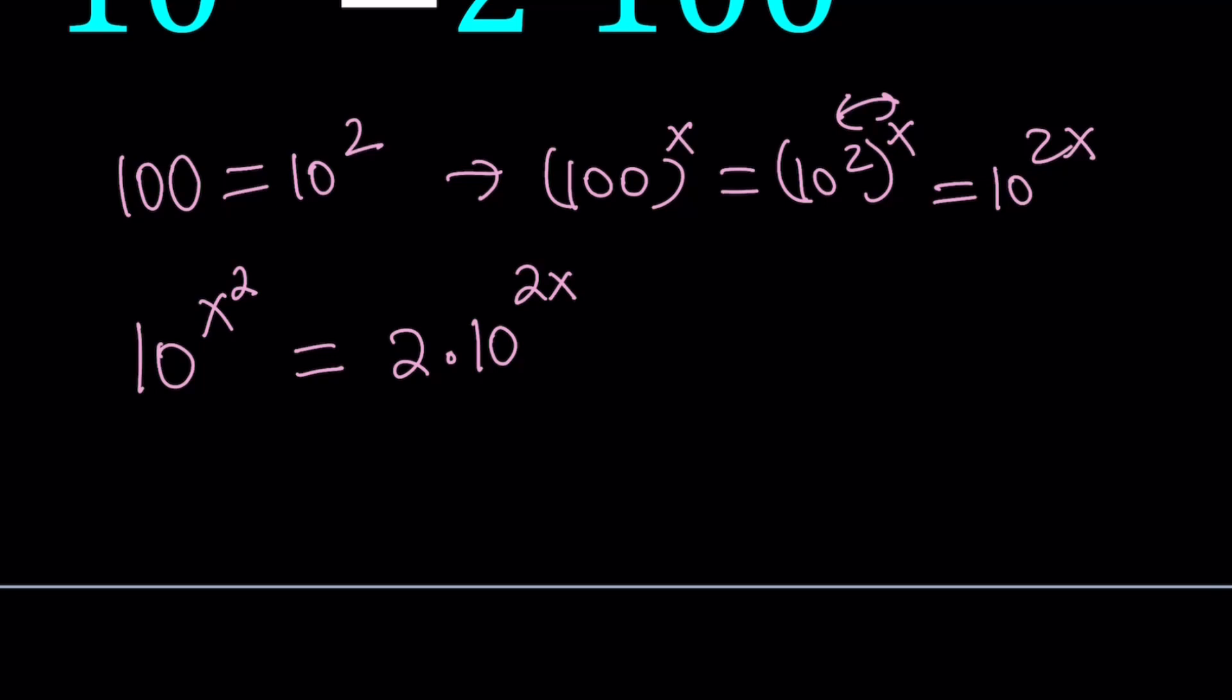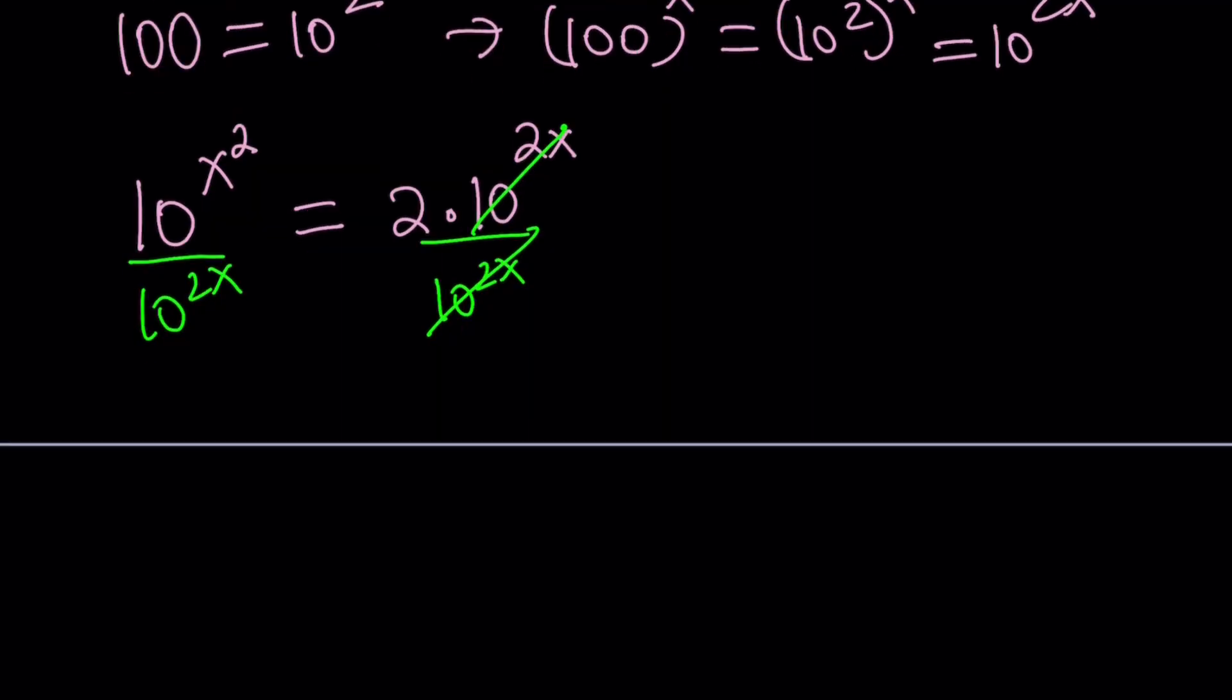So let's divide both sides by 10 to the power 2x. That's going to give us 10 to the power x squared divided by 10 to the power 2x equals 2 because 10 to the power 2x cancels out.